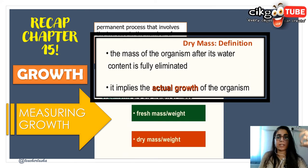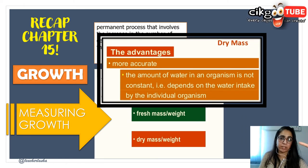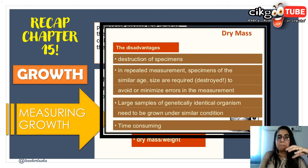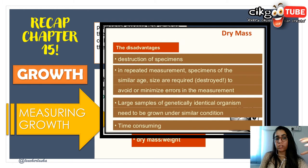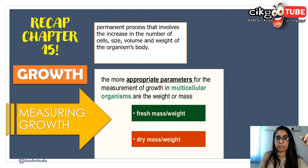Dry mass is the actual measurement of growth — you remove all the water and dry the specimen, then weigh it, which gives the most accurate result with no fluctuation due to water. However, the disadvantage is that you must destroy the specimen. For repeated measurements, specimens of similar age and size are required, and large samples need to be grown under similar conditions, making it very time-consuming. Also, recall from last year that the growth curve is a sigmoid curve.